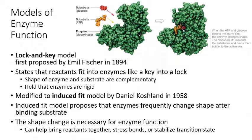The lock and key model was first proposed in 1894 by Emil Fischer. He proposed that reactants would fit into an enzyme the way a key fits into a lock, meaning the active site would be perfectly shaped to fit the substrates. The issue with that model is it suggests enzymes are rigid structures that can't change their shape. Since many of them do change their shape, the lock and key model was updated to the induced fit model in 1958 by Daniel Koshland.